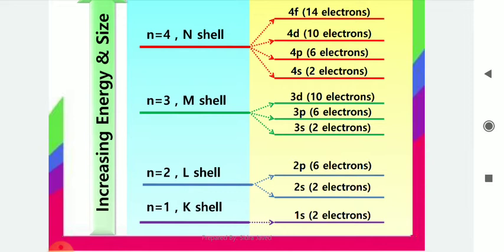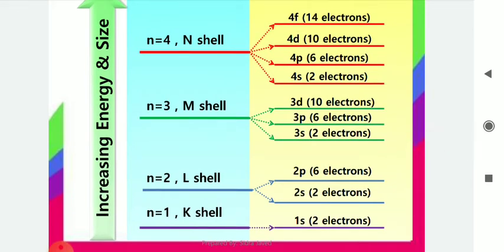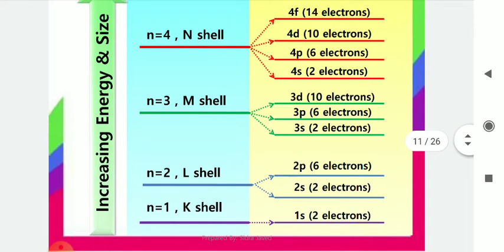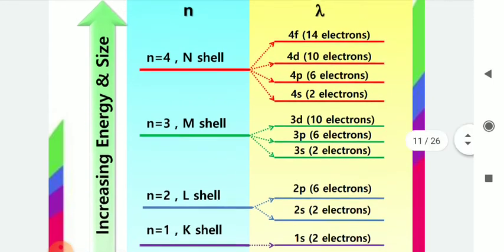For n equals 2, that is the L shell. Moving to n equals 3, that shell is called the M shell. The total number of electrons in this shell is 18, accommodated in three sub-orbitals: 3s, 3p, and 3d. In 3s, 2 electrons are accommodated; in 3p, 6 electrons; and in 3d, 10 electrons. These are the three sub-energy levels of the M shell.